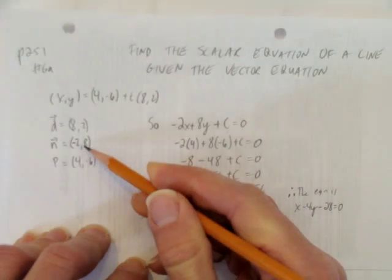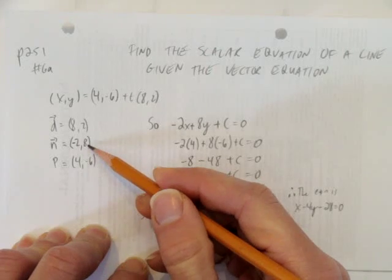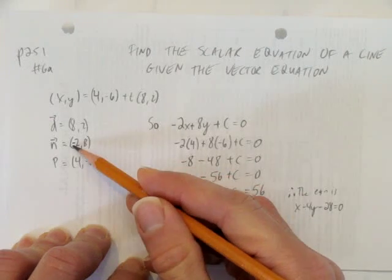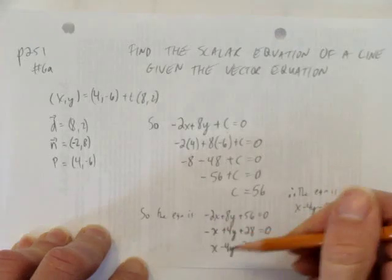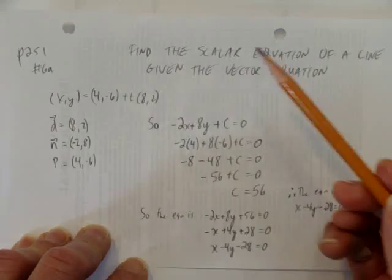We could have saved some of those steps by noticing here we can make this normal vector reduced. Instead of 2, 8, it could have been 1, 4. And we could have put the minus on the 8. And that would have saved some of those reducing steps. Nevertheless, how did we do it?